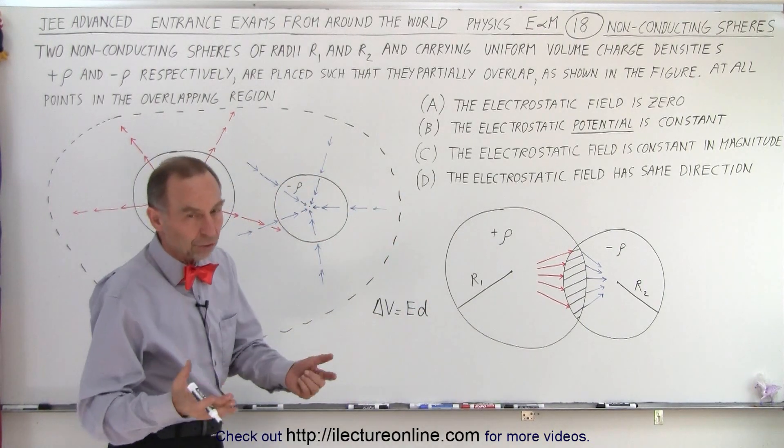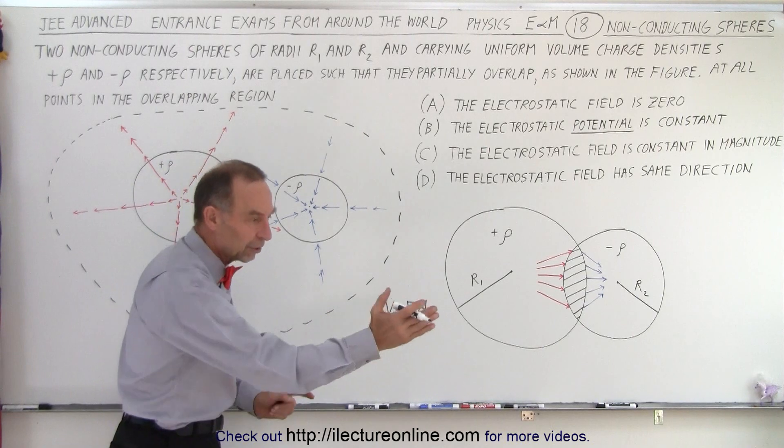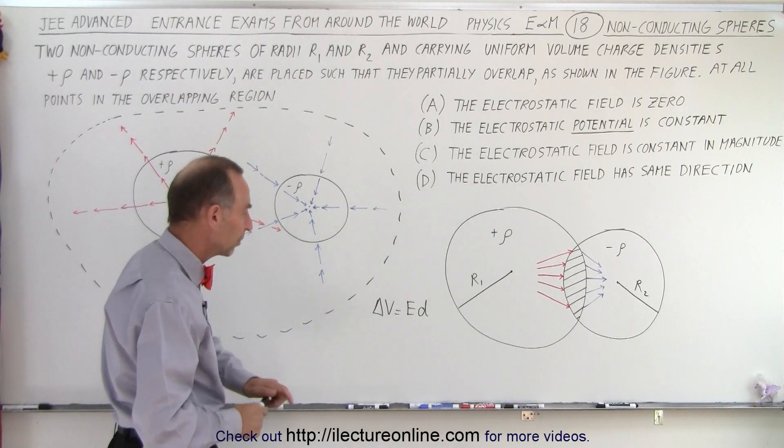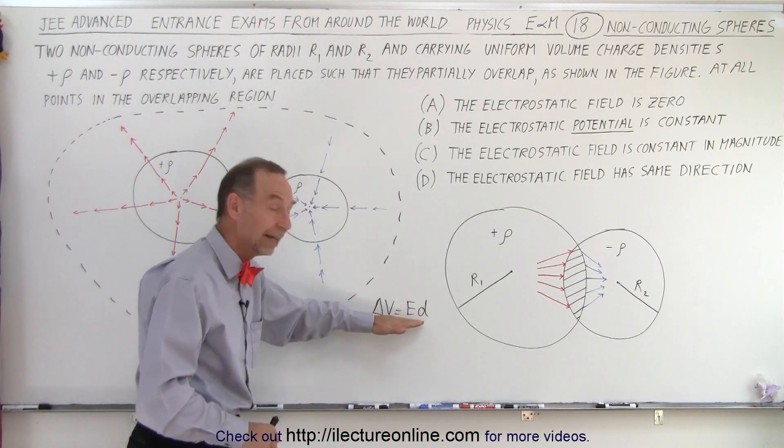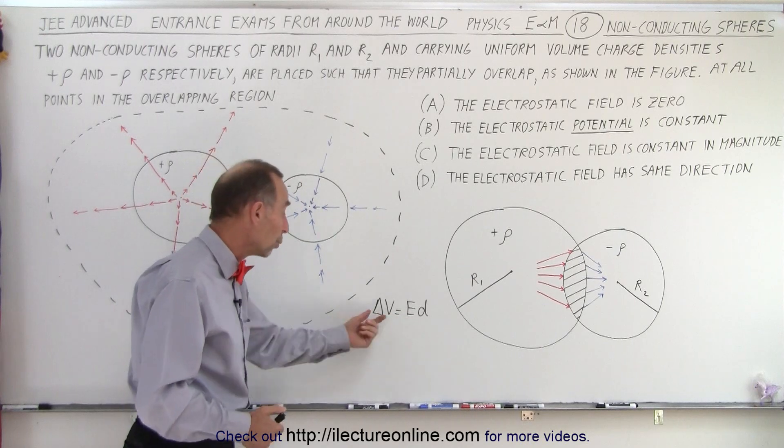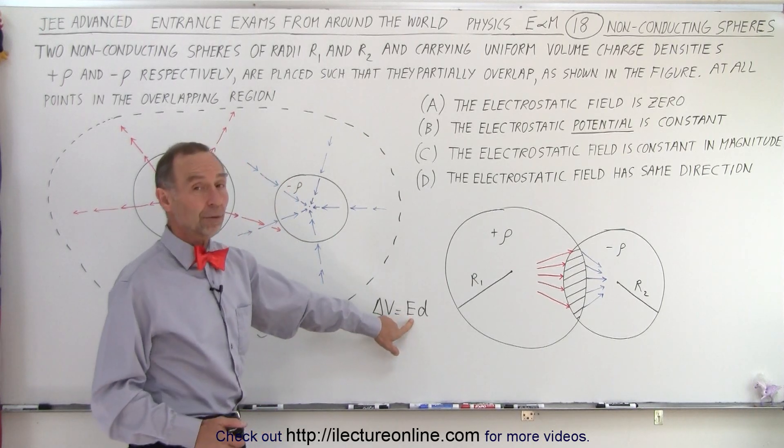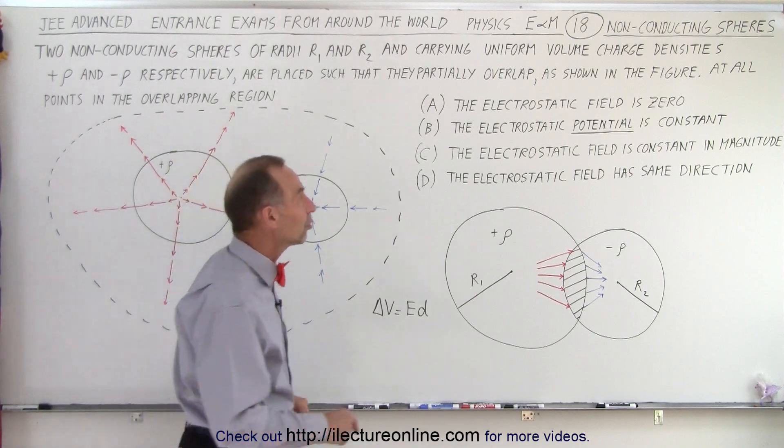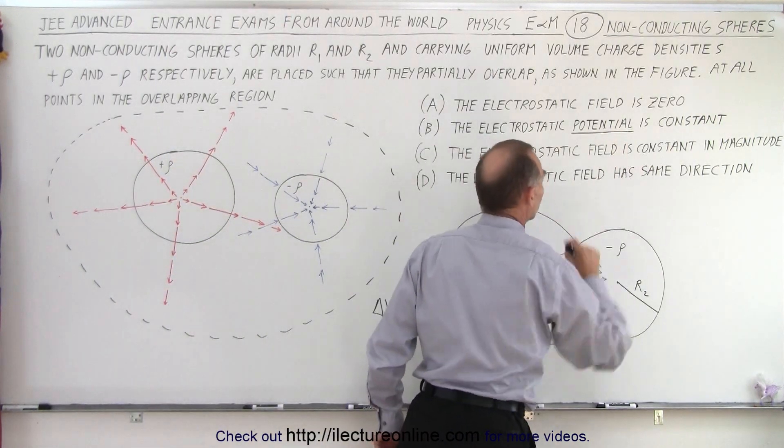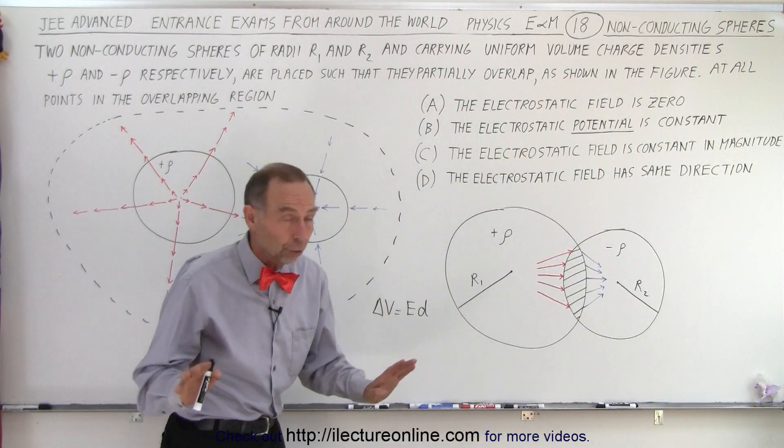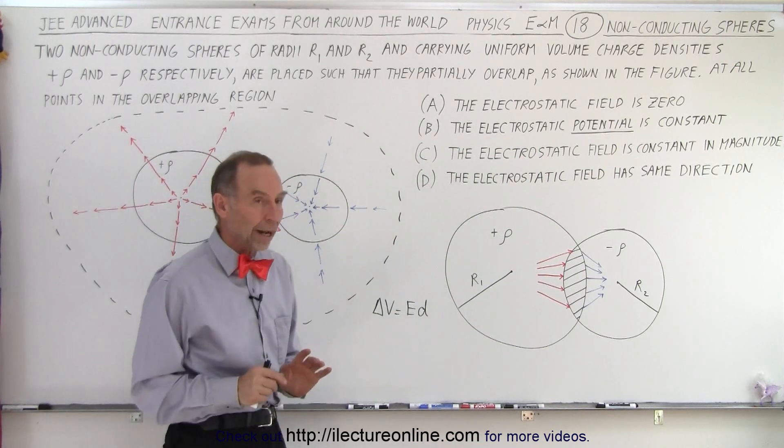After all, the change in potential is equal to the magnitude of the electric field times the distance traveled through that, and of course, times the cosine of the angle between the two. But essentially, if you travel in the same direction as the direction of the electric field, you will have a change in potential. But if E is zero, then there will not be a change in potential. That means the potential would be constant. So we have to determine whether or not A is correct.